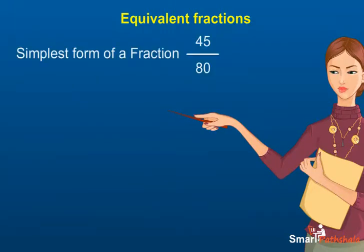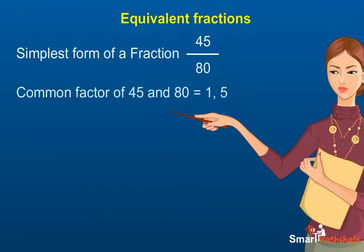Consider a fraction 45 upon 80. We can see that in this fraction, the numerator and denominator have some common factor. So, we can divide the numerator and denominator of the fraction with the common factor 5 to get an equivalent fraction.